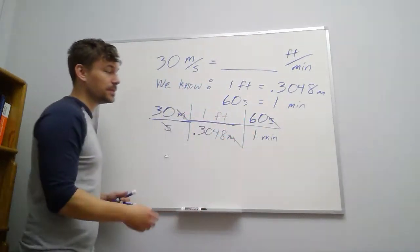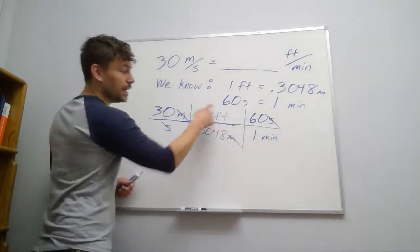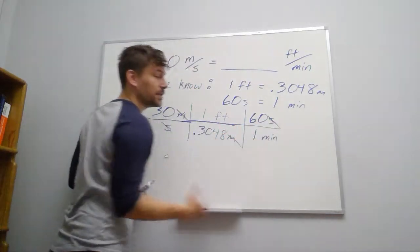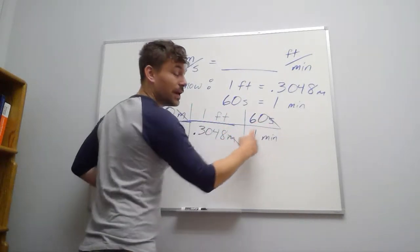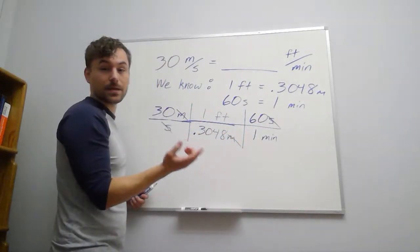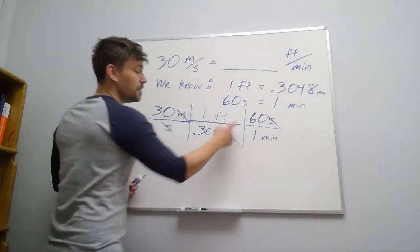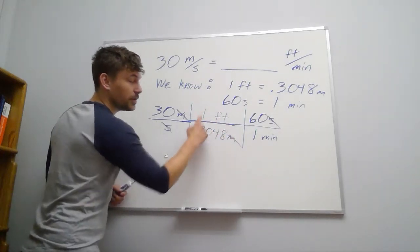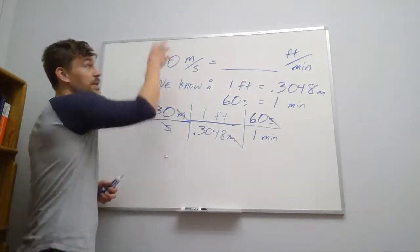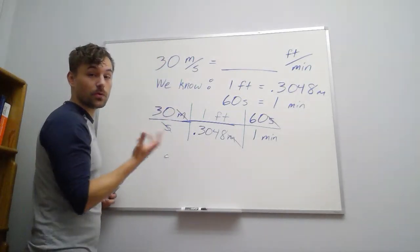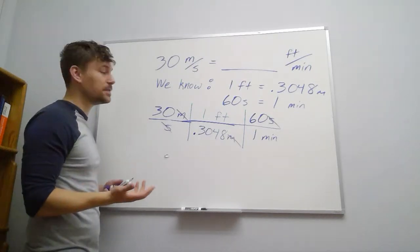We're allowed to go through this process because if we look at each of these as fractions, 60 seconds over one minute, well, that's just something divided by itself. So we're just multiplying essentially by one. Same thing here with feet and meters. We're using our conversion so that we're just multiplying by one. So we're not changing the value of this. We're only changing the units, right? The frame of this.